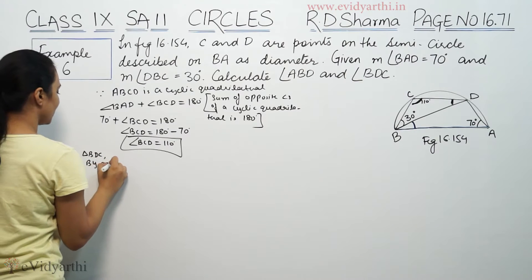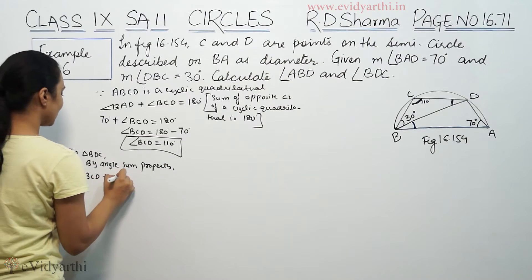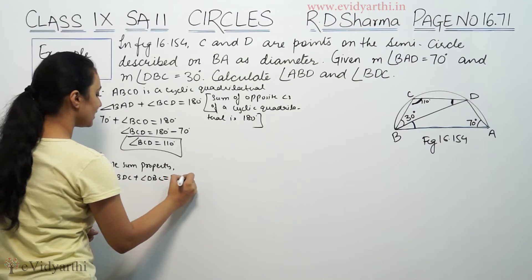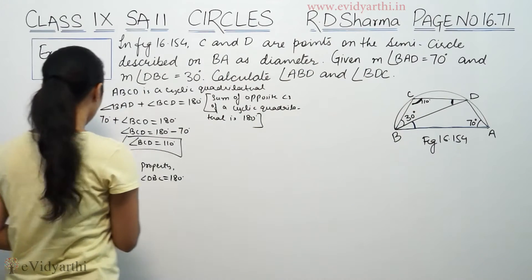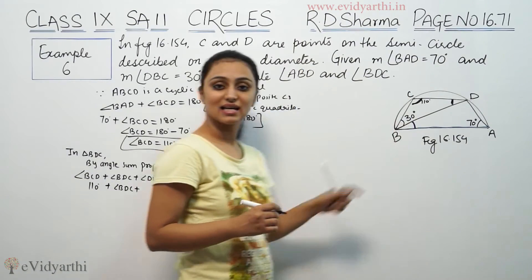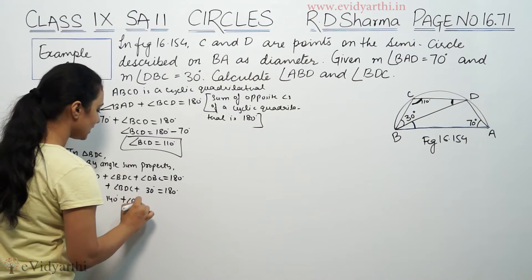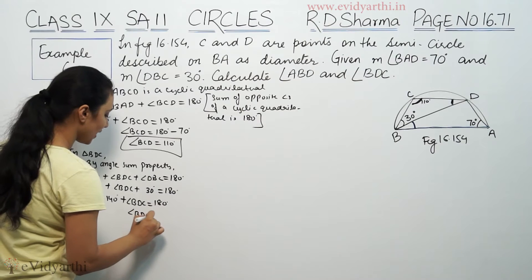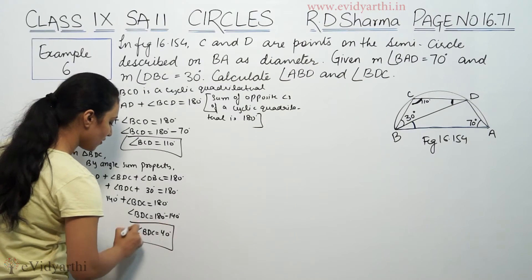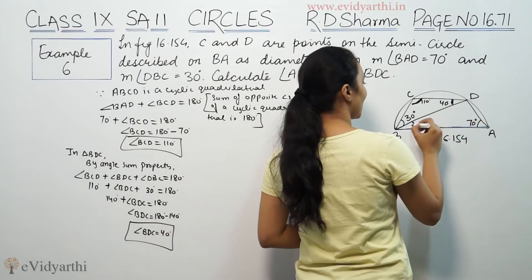Now we draw angle BAD. Angle BCD is 110 degrees. We need to find angle BVC. Angle DBC is 30 degrees, so 30 plus 110 plus angle BVC equals 180 degrees, giving us angle BVC equals 180 minus 140, which is 40 degrees.